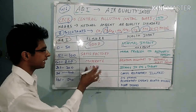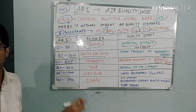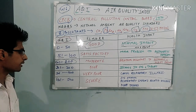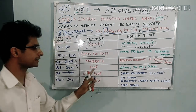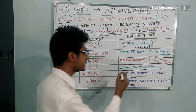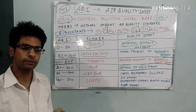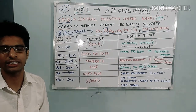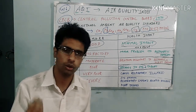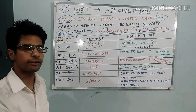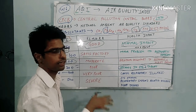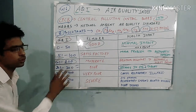The range 200 to 300 is 'Poor.' At this level you experience itching in the eyes and throat. If you live in a clean village environment and come to the city, you will feel itching in the eyes and throat, along with some respiratory discomfort at this level.